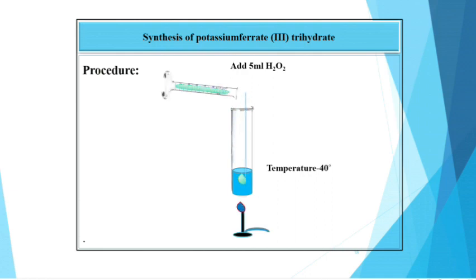Then add to this solution previously prepared ferrous oxalate with constant stirring. Now, to this solution, add 5 ml H2O2, maintain the temperature at 40 degree centigrade. Here, PPT of FeOH3 will appear.